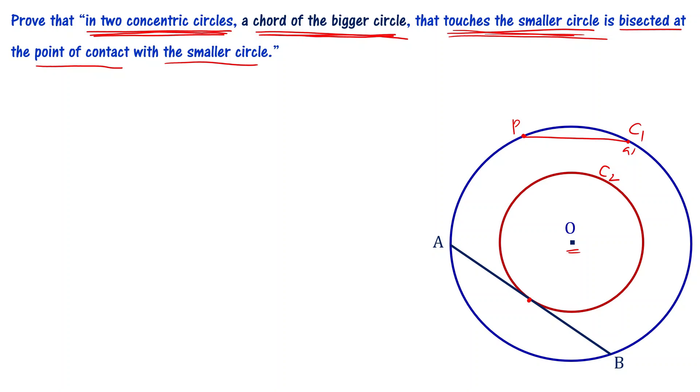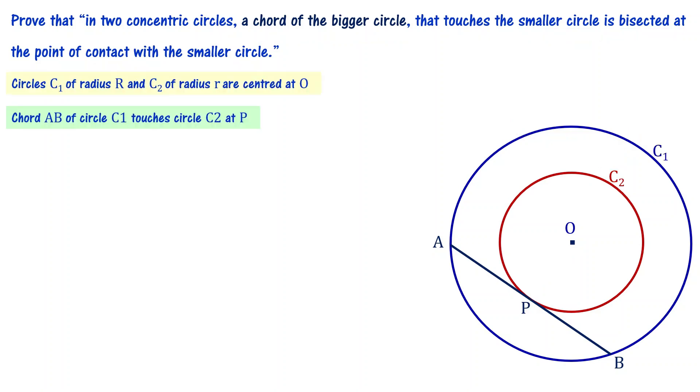Now, what is the proof we are asked to do? The point of contact is going to bisect the chord of the bigger circle. At the point of contact with the smaller circle, the chord is divided into equal parts. For example, point P and AP equal to PB, and that is what we have to prove.